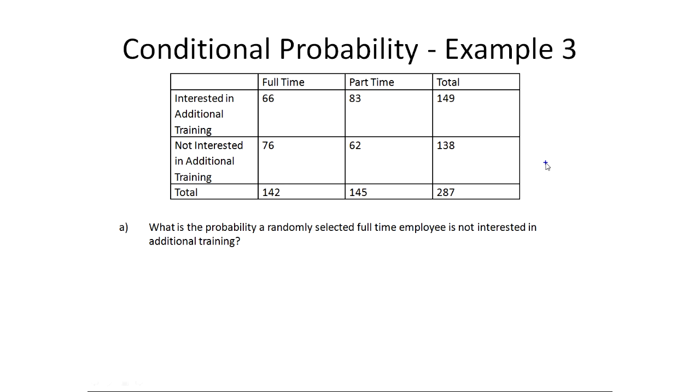So focusing on the questions that's asked and how we write this with notation, because that's going to help us out later, it says: what's the probability a randomly selected full-time employee is not interested in additional training? Now notice what's happening here. We're not looking at the big group of all employees anymore. We're specifically looking at full-time employees. The way the notation works for conditional probability is what you're trying to find goes first, and then you have a line that represents given. And so we know the person's full-time, so essentially we're trying to find the probability of something given that they're full-time. And what we're trying to find the probability of is that they're not interested in additional training. So I would just write not interested given full-time employee.